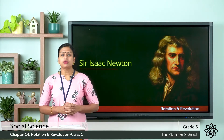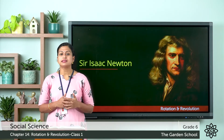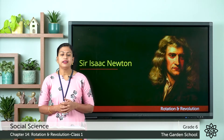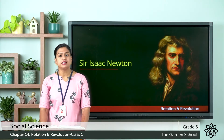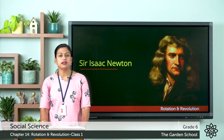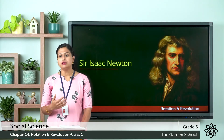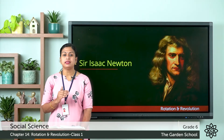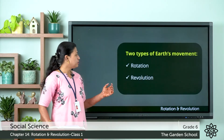Now let's discuss rotation and revolution. The universe consists of the sun, stars, planets, galaxies, dust, cloud, light and even time. Earth is the third planet in the solar system from the sun, and it is also the largest terrestrial planet. The earth was formed about 4.54 billion years ago, and in the beginning the earth was in the molten state. Over time the surface cooled and became crust. Earth is the only planet that supports life, and it has two different types of movements: rotation and revolution.